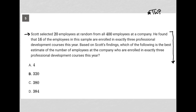The first sentence here says: Scott selected 20 employees at random from all 400 employees at a company. So I'm going to represent that by writing the number 400, drawing a little line underneath it with an arrow coming out of that 400 to represent the 20 that were selected from the 400.